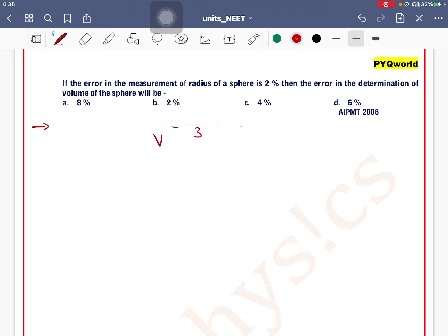4/3 π r³. So percentage error in volume is equal to... 4/3 mein toh koi error nahi aayega because constant hai. R cube ko kaise likha jayega? 3 into ΔR/R × 100, that is percentage error in radius. So 3 into 2%, 3 into 2% kitna